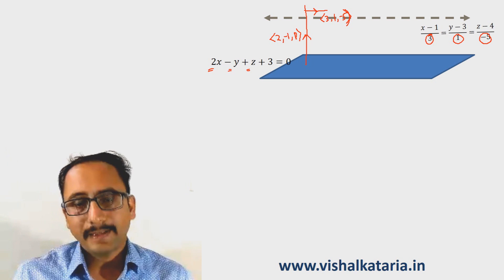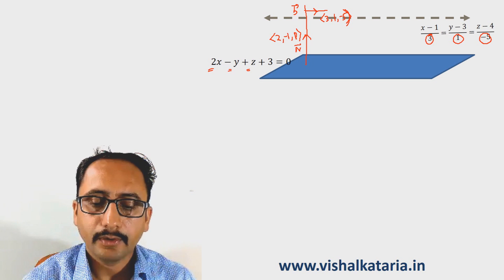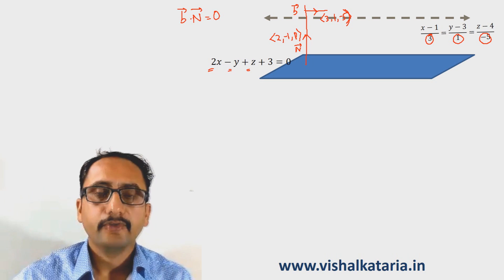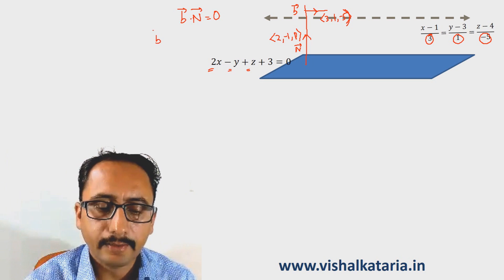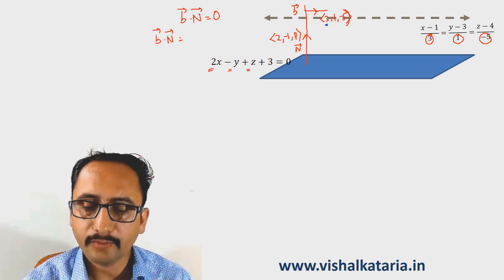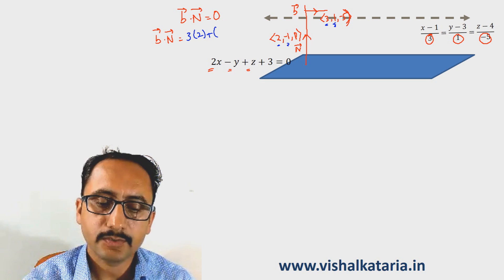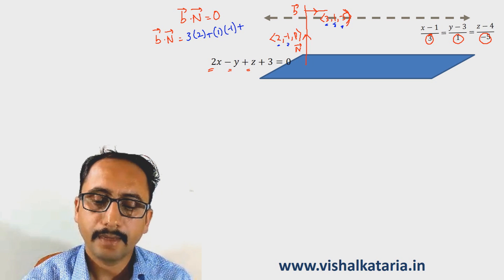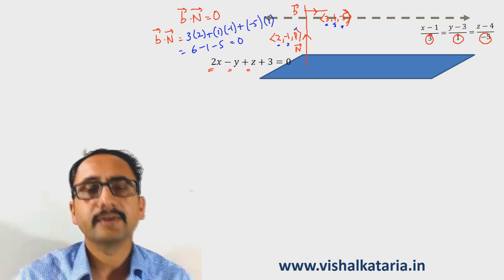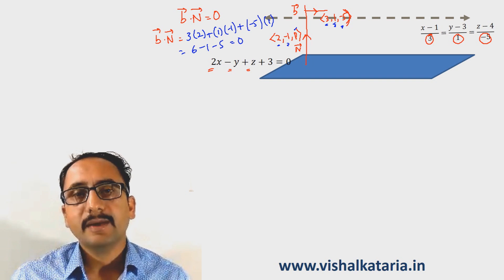The line will be parallel to the plane if and only if vector b is perpendicular to vector n, which means b dot n has to be 0. Let us find b dot n: the dot product of DRs is 3 times 2 plus 1 times minus 1 plus minus 5 times 1, which equals 6 minus 1 minus 5 = 0. Since b dot n is 0, b is perpendicular to n, meaning the given line is parallel to the given plane.